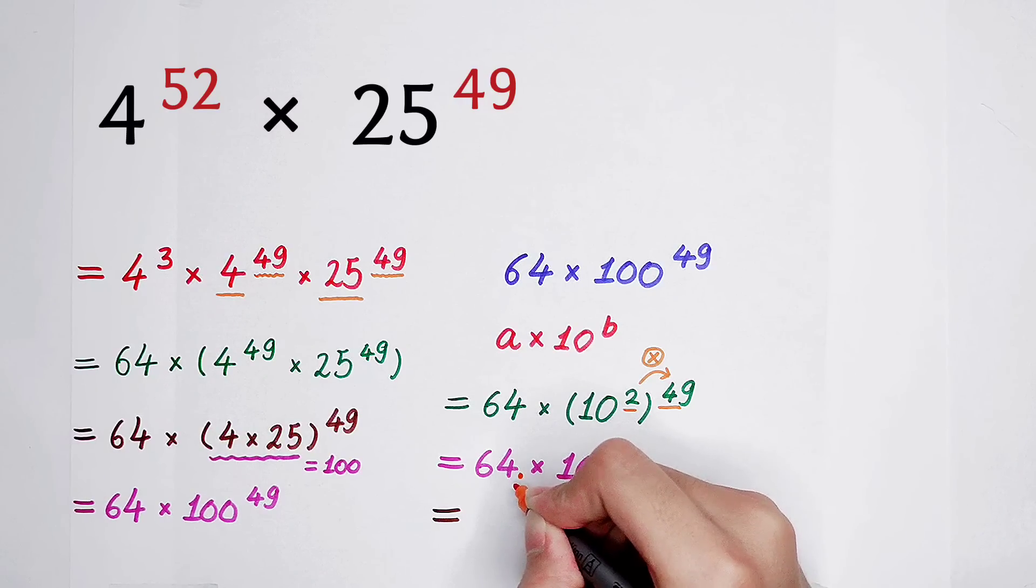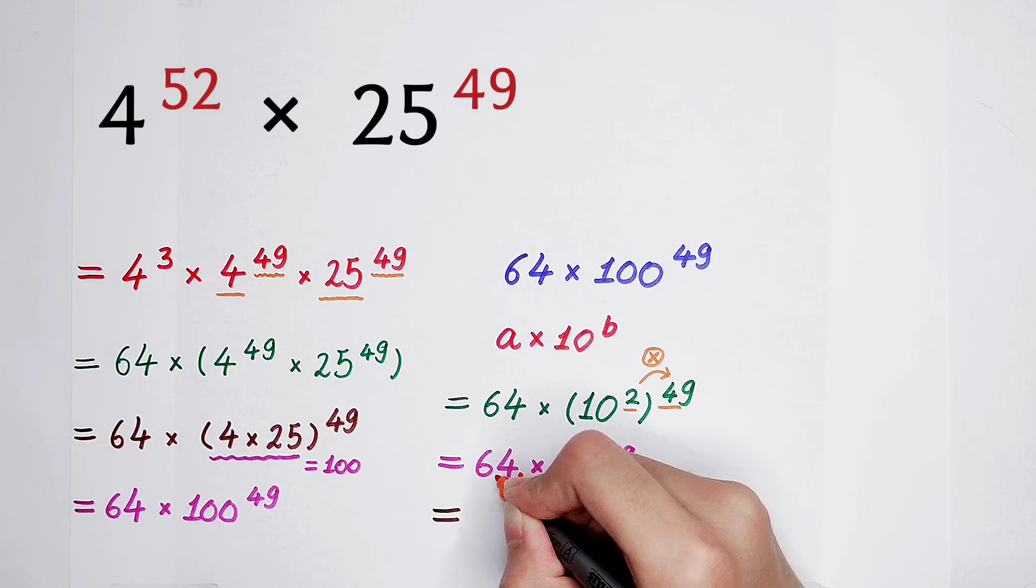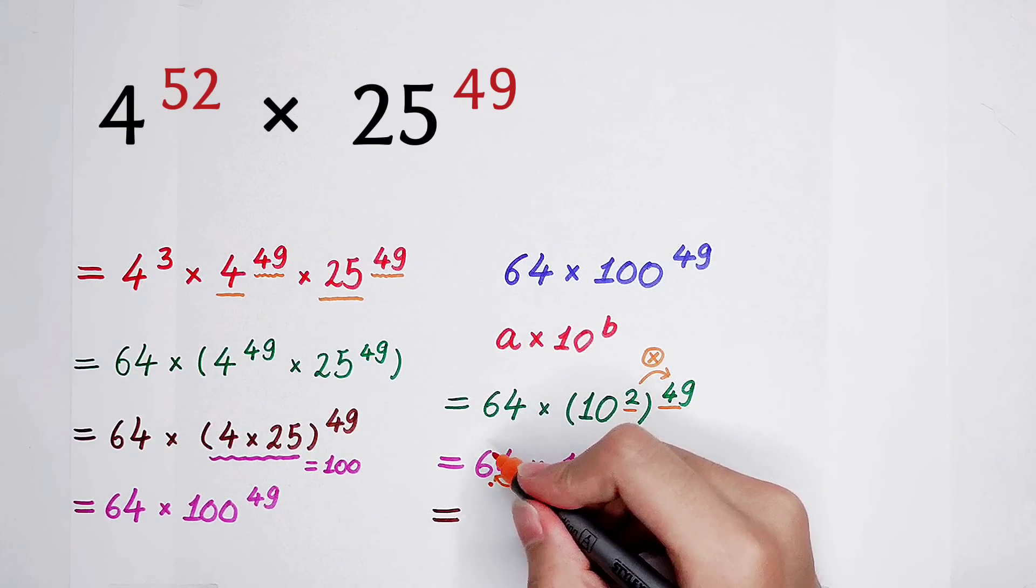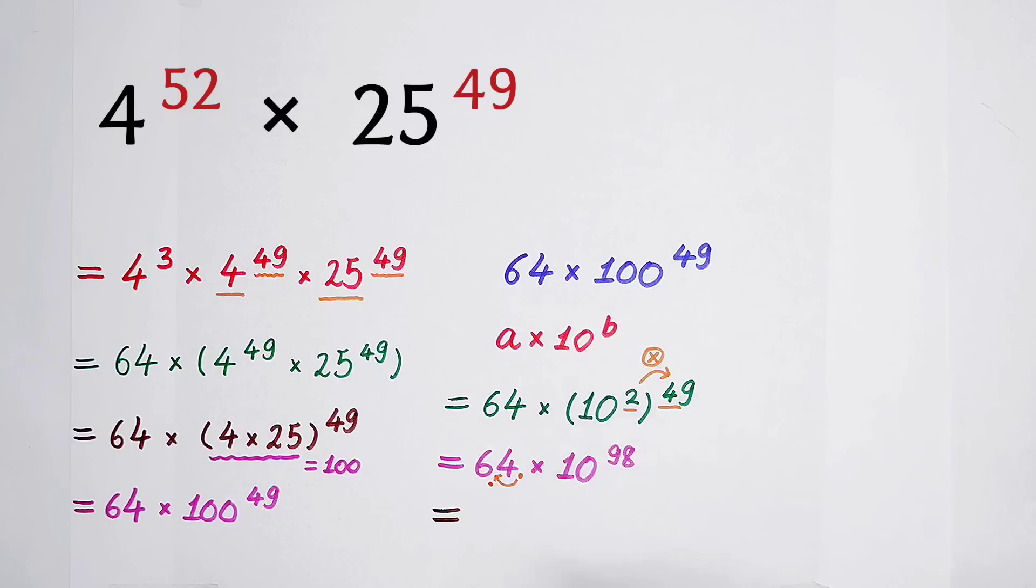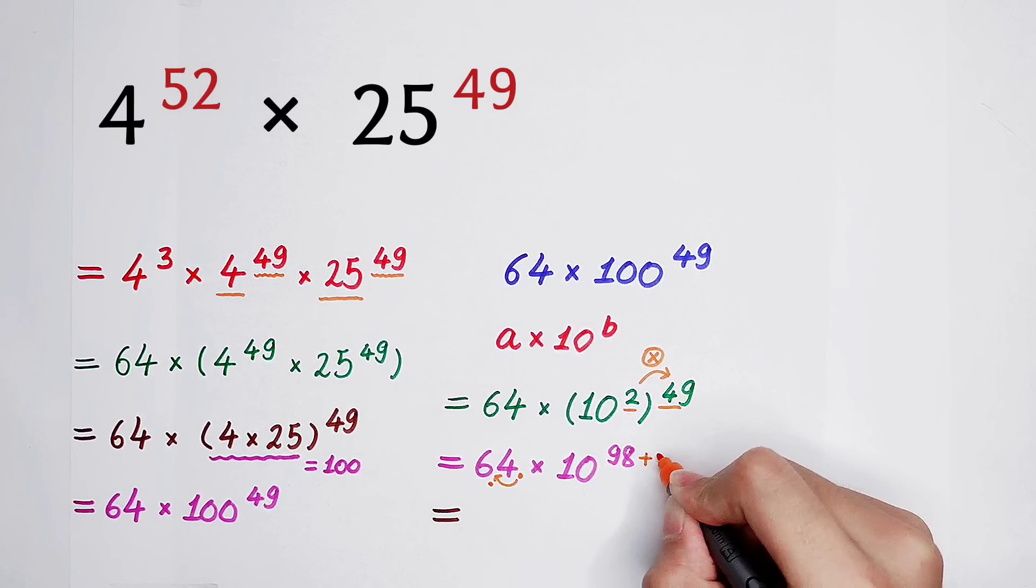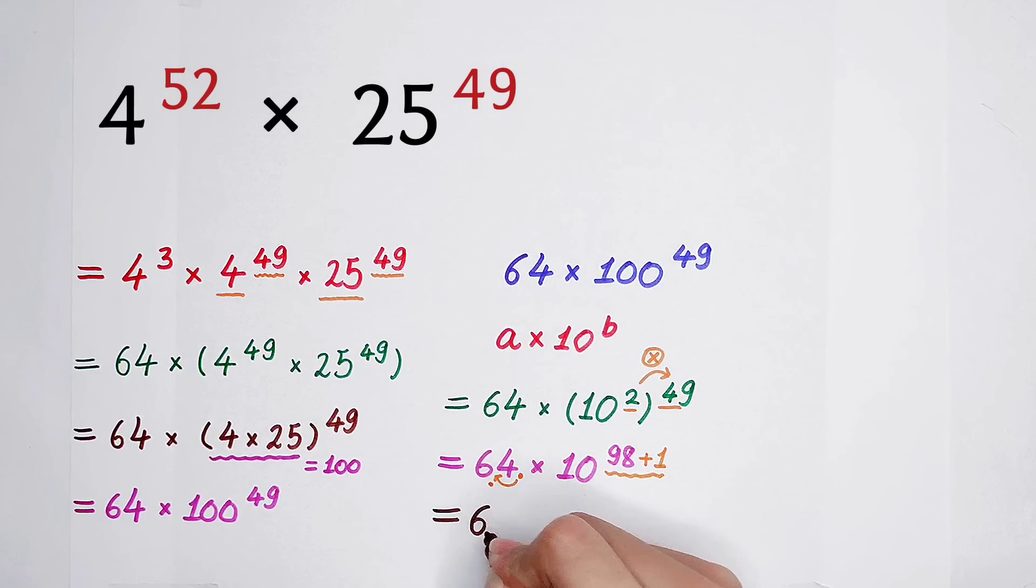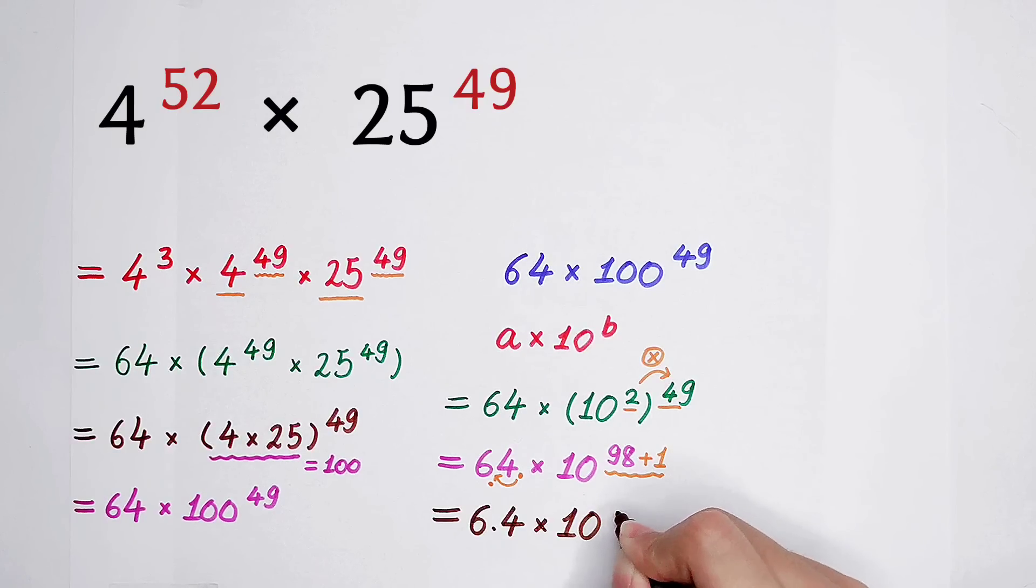here is the decimal point, and I just move the decimal point here, between 6 and 4, 6.4. And then, if I move a decimal point from right to left, one digit, then I have to plus 1 on the exponent. So, it is 6.4, then times 10 to the power 99.